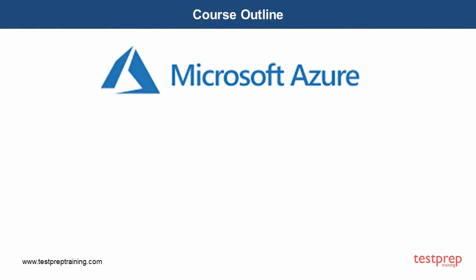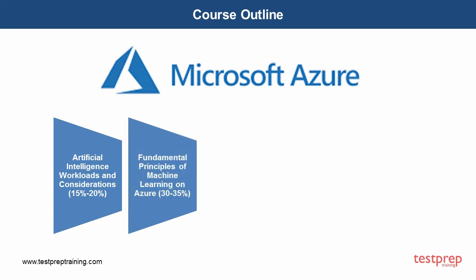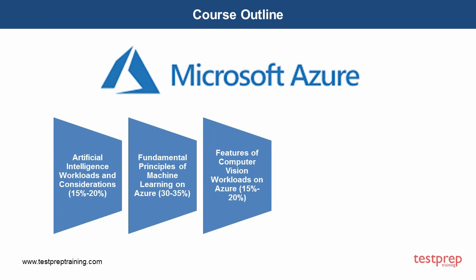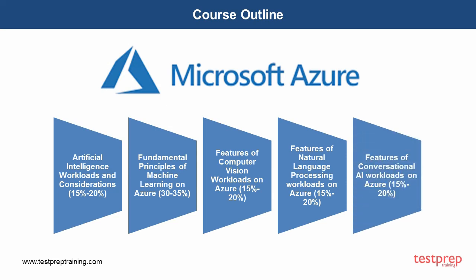Course outline. 1. Artificial intelligence workloads and considerations, which comprises a 15-20% weightage in the exam. 2. Fundamental principles of machine learning on Azure, which comprises 30-35% weightage in the exam. 3. Features of computer vision workloads on Azure, which comprises a 15-20% weightage in the exam. 4. Features of natural language processing workloads on Azure, which comprises a 15-20% weightage in the exam. 5. Features of conversational AI workloads on Azure, which comprises a 15-20% weightage in the exam.